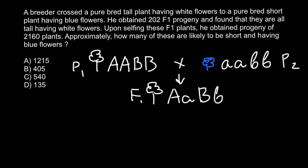Now let's return to the problem — upon selfing these F1 plants. What does selfing mean? This means we cross plants within the F1 generation itself. So we cross parents that are heterozygous for both traits with the same genotype — a self-cross — and this is how we obtain the F2 generation.